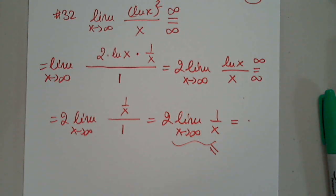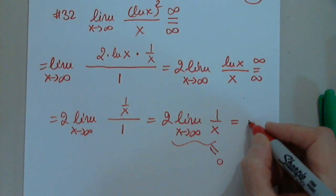So where does it go? Remember the graph of 1 over x as x approaches infinity? Zero. Good. How much is 2 times 0? Zero. That's it.